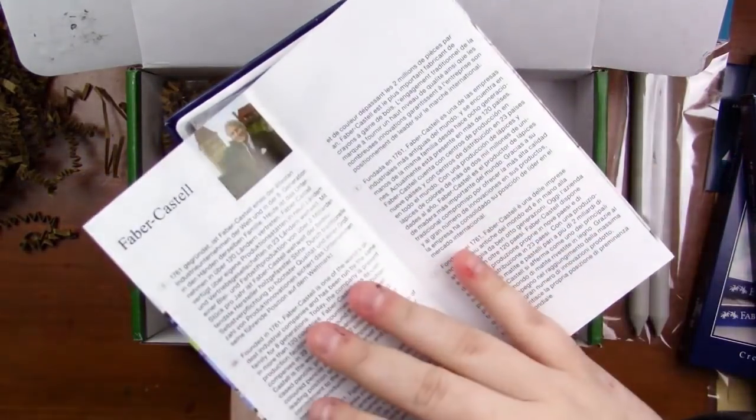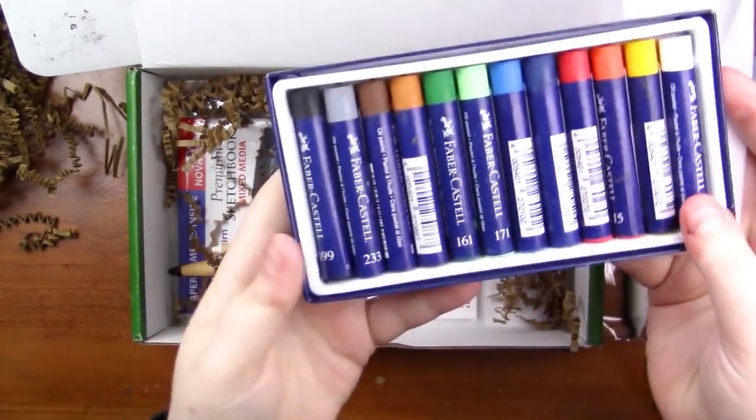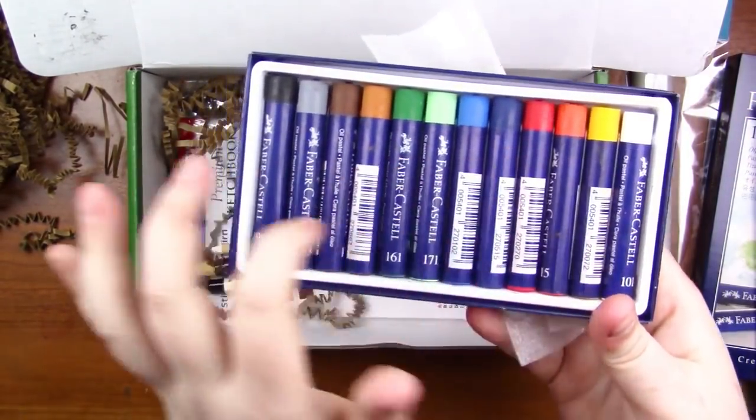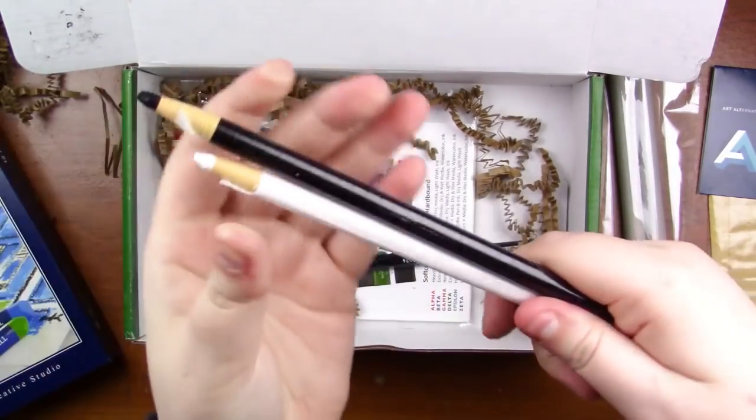So this is like a little pamphlet thing but we're not going to go too much into that. So let's look at the goods. So we've got just like your basic colors from white to black. Very nice. Looks like we've got a couple of these.